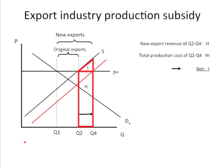This does have the advantage that, A, it is allowed under international trade rules, and B, it doesn't increase the domestic price. It does put a burden on domestic taxpayers, but so did the export subsidy. So many governments in recent years have tended to go more towards subsidizing production in an export industry rather than subsidizing exports themselves.